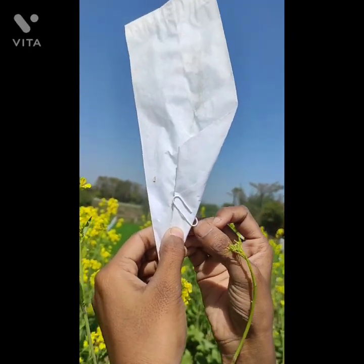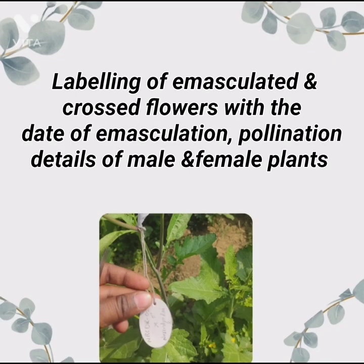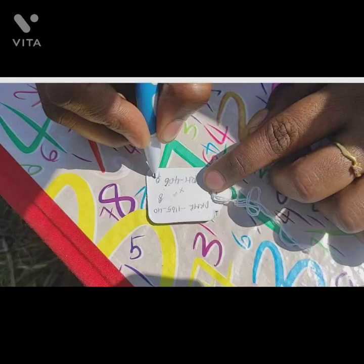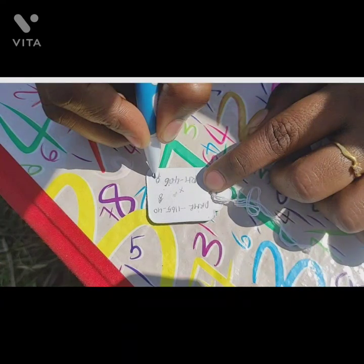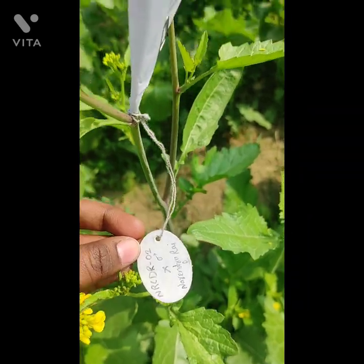The last step is tagging. Tagging is the labeling of emasculated and crossed flowers with the date of emasculation, date of pollination, and names of male and female plants. This is how we write details of male and female plants on a tag. Male and female plants are represented with a symbol. The tags are tied to the plants with thread. This is tagging.